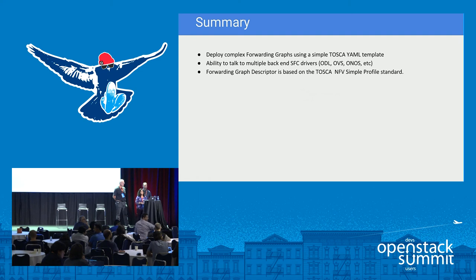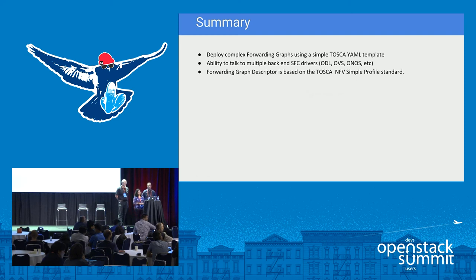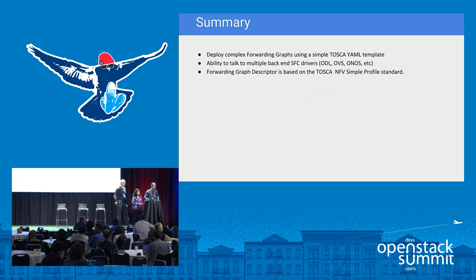A comment from a telco background: in mobile broadband, classification is based on subscriber subscription profiles, not just IP and port. The response: a PCRF (Policy Control and Routing Function) interface providing subscriber awareness is one way to address this classification requirement.